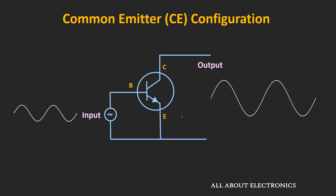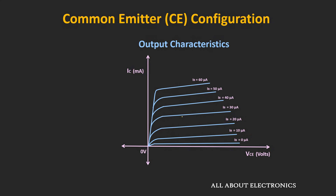Let's understand this through the output characteristics. Say the BJT is biased such that VCE is equal to 5V and the collector current IC is equal to 10mA. This point on the collector curve is known as the operating point or the Q point of the BJT. The reason it is called the operating point is because it tells us the operating voltage and current of the given transistor. This particular operating point tells us that the transistor is biased such that IB is equal to 30μA and VCE and IC are 5V and 10mA respectively.